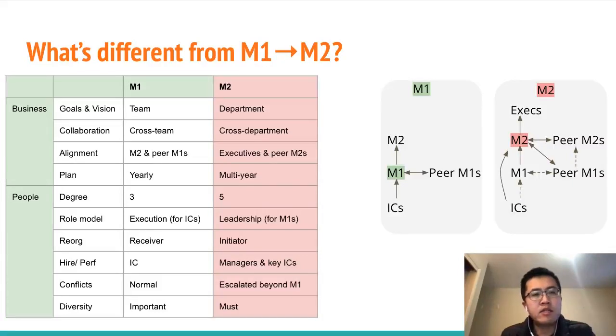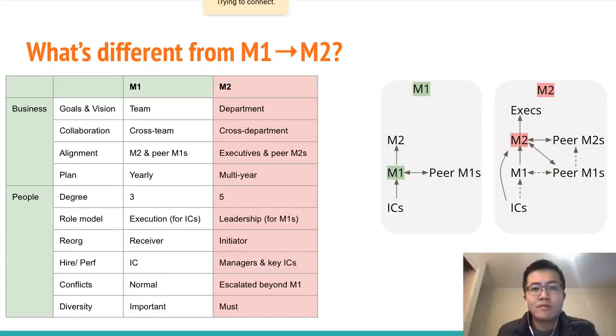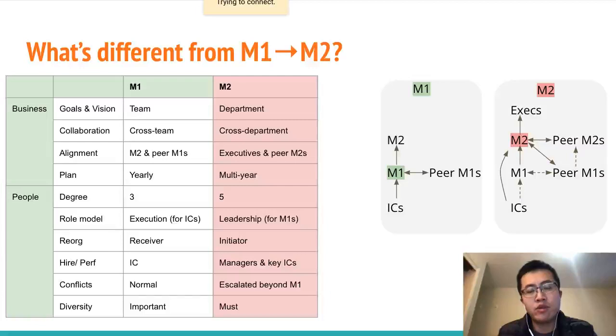Second, let's compare the people side. These two diagrams show the degree of connections that are critical for an M1 versus an M2.